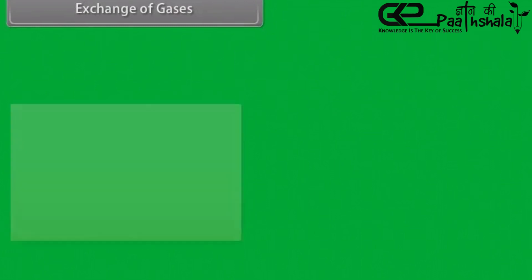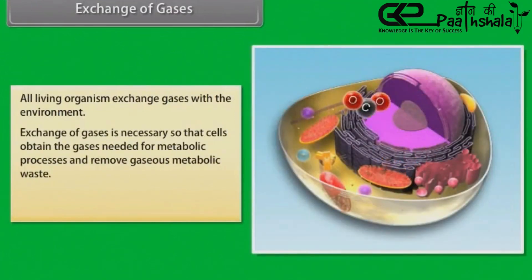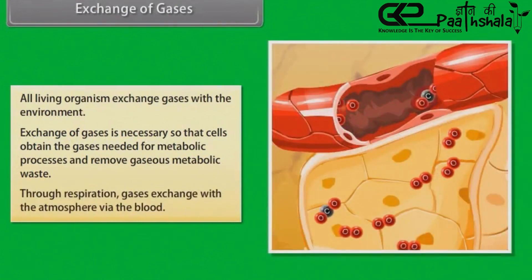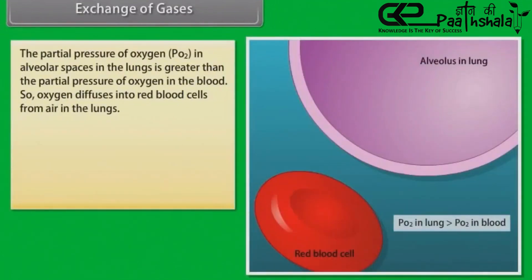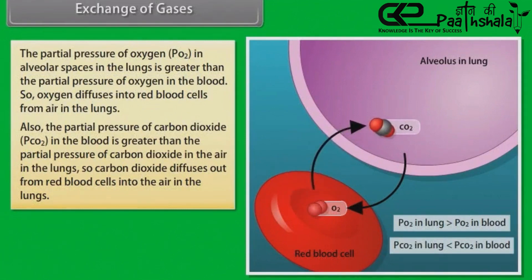Exchange of Gases. All living organisms exchange gases with the environment. Exchange of gases is necessary so that cells obtain the gases needed for metabolic processes and remove gaseous metabolic waste. Through respiration, gases exchange with the atmosphere via the blood. The partial pressure of oxygen in alveolar spaces in the lungs is greater than the partial pressure of oxygen in the blood, so oxygen diffuses into red blood cells from air in the lungs. Also, the partial pressure of carbon dioxide in the blood is greater than its partial pressure in the air in the lungs, so carbon dioxide diffuses out from red blood cells into the air in the lungs.